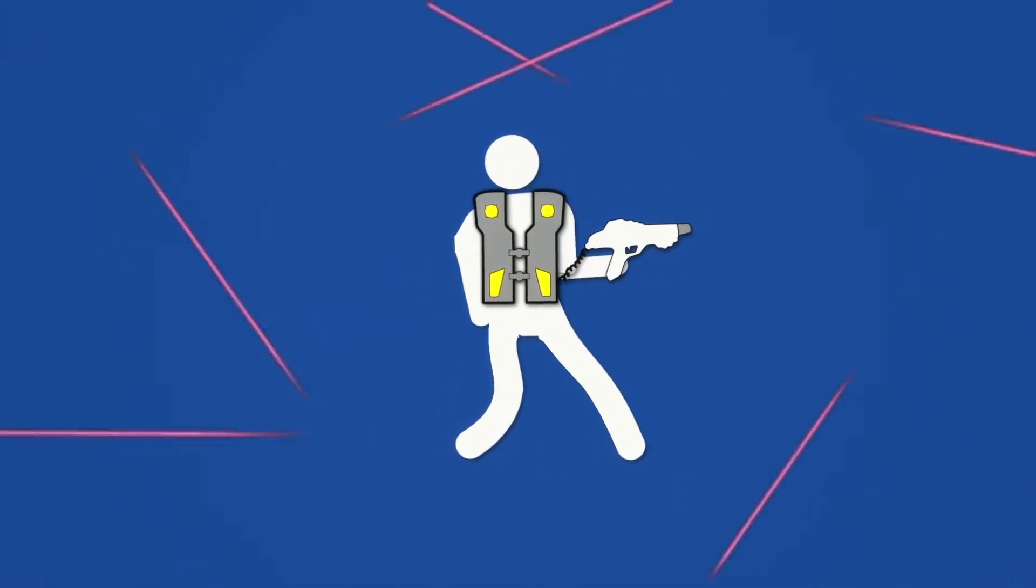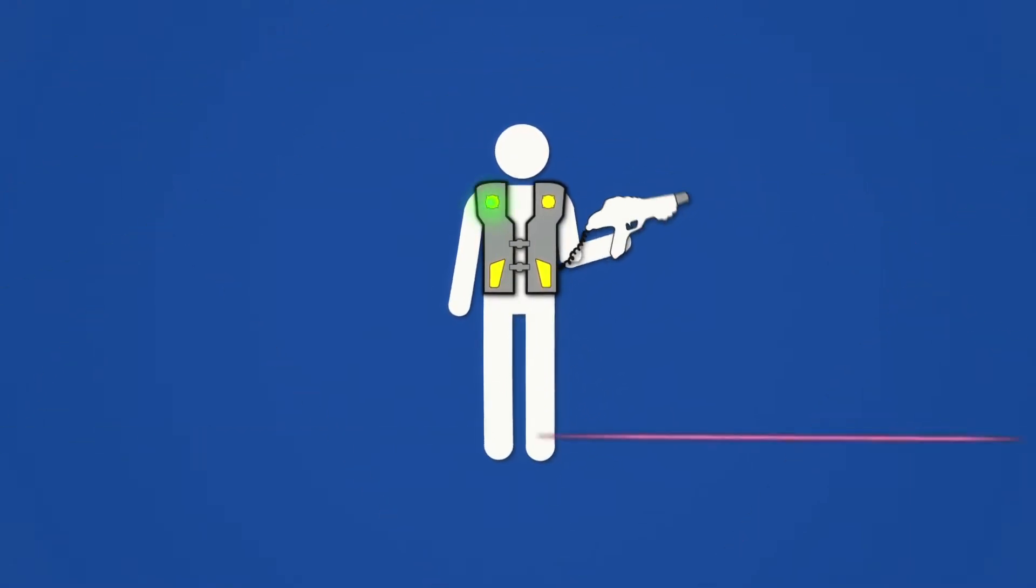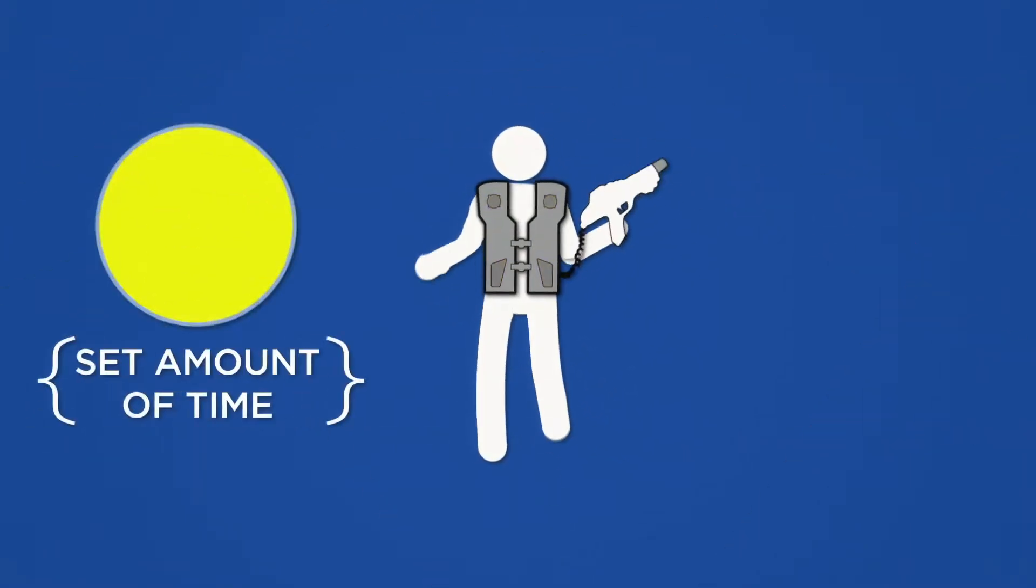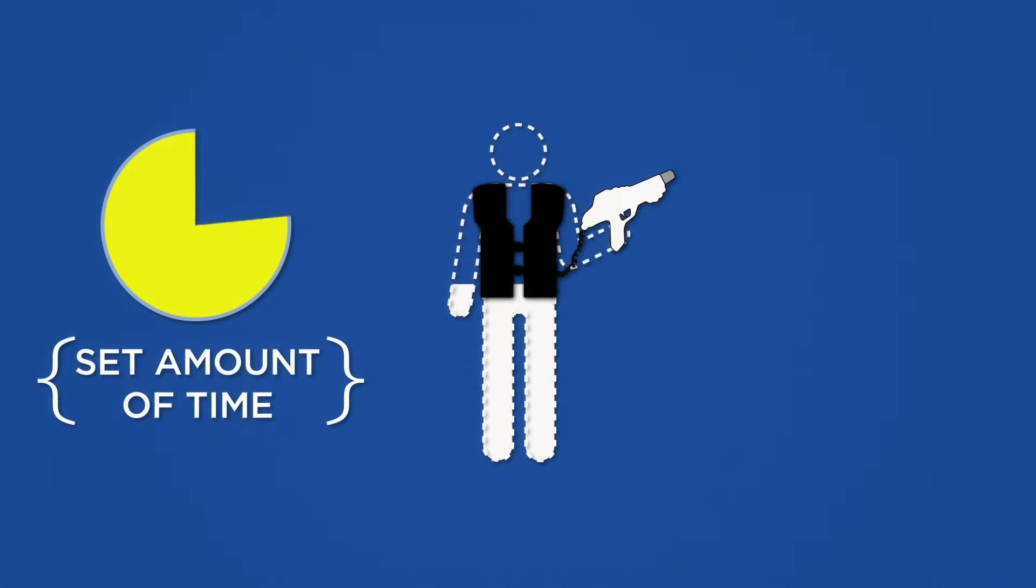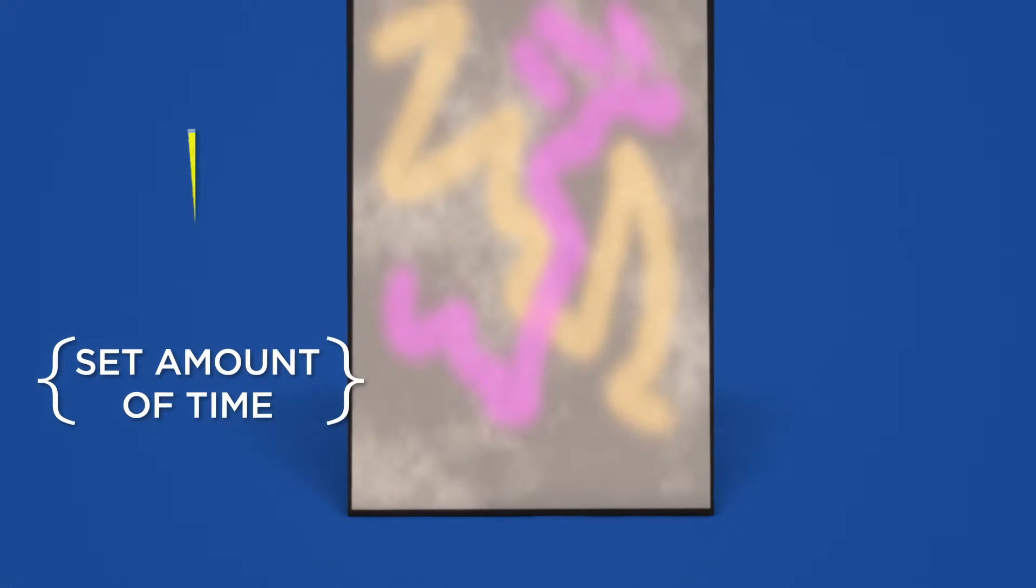If your foes should happen to tag your light armor or laser rifle with their beam, your equipment will shut down for a short period of time and your vest will go dark, hiding you from your foes. Find a place to hide and wait it out. You'll be back in the action soon enough.